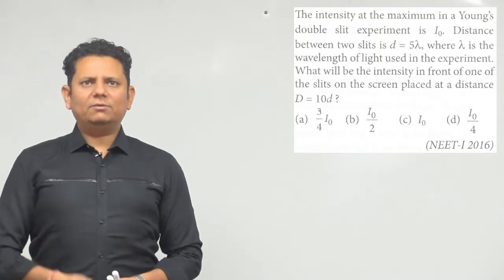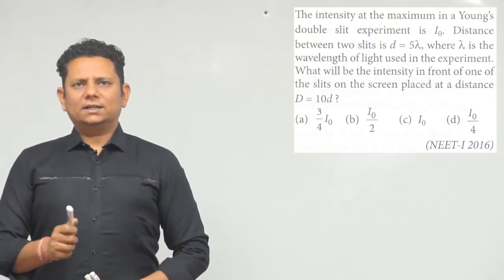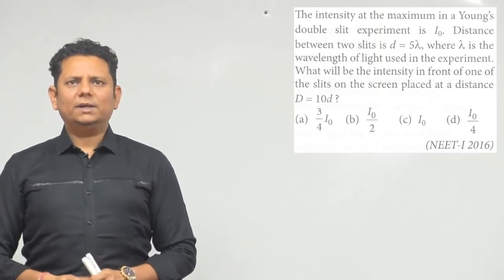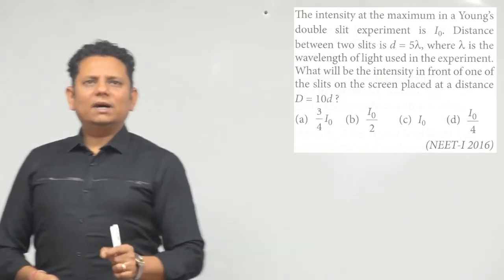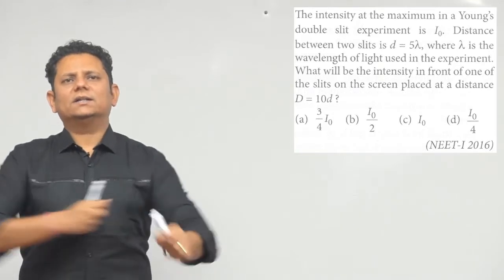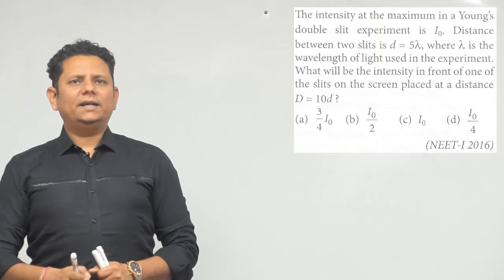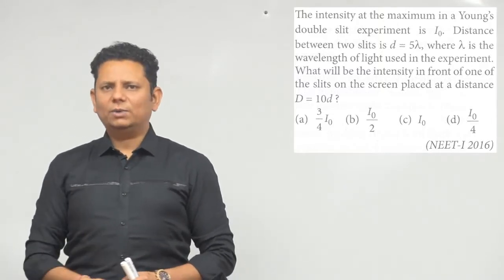Next question: the intensity at the maximum in a YDSE setup is I0. The distance between the two slits is small d, its value is 5 lambda, where lambda is the wavelength of light used. What will be the intensity in front of one of the slits on the screen, placed at a distance D equal to 10d? Options: 3/4 I0, I0/2, I0/4.